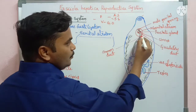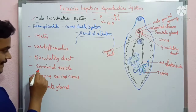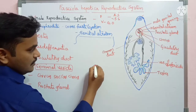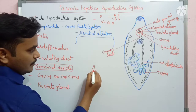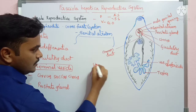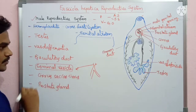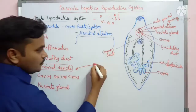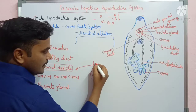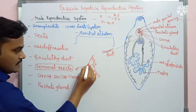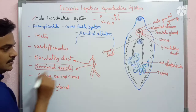This common duct opens into the seminal vesicle. This forms a common seminal duct, found in the anterior region of the body. The vas deferens duct next opens into the seminal vesicle. From there, moving forward into the anterior region, an ejaculatory duct is also formed in the anterior region of the body.